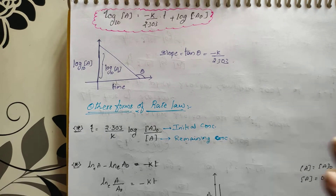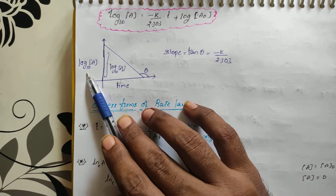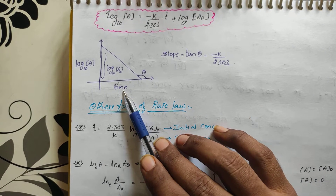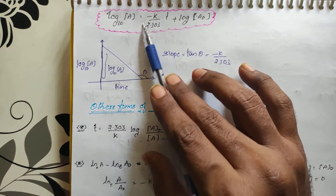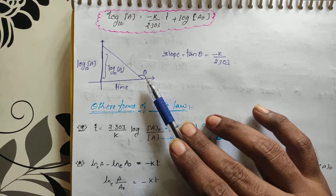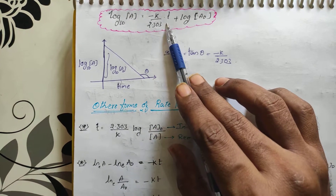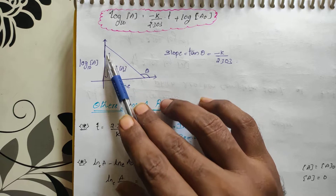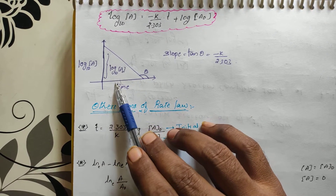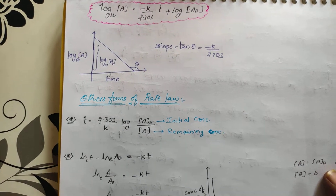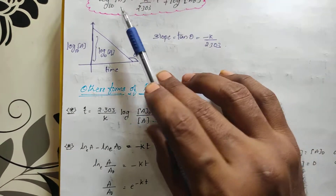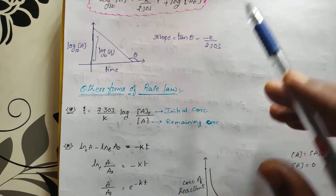If we plot the graph of log₁₀[A] with respect to time, we get a straight line with a negative slope. The slope equals −K/2.303, and the intercept is log₁₀[A₀]. This is the final equation for first order kinetics in logarithmic form.